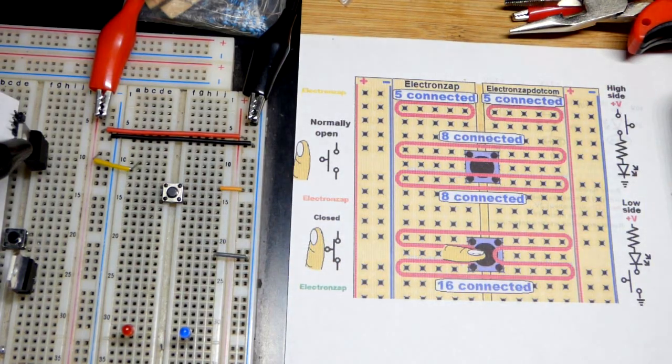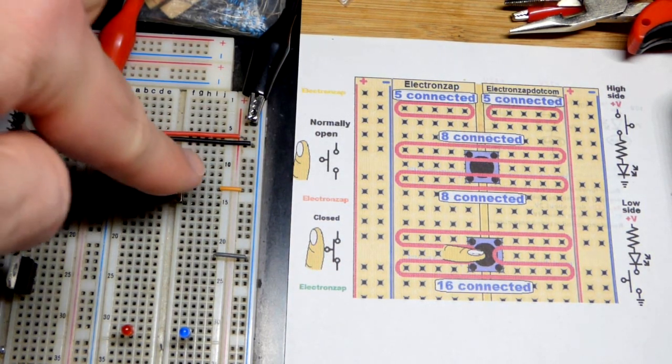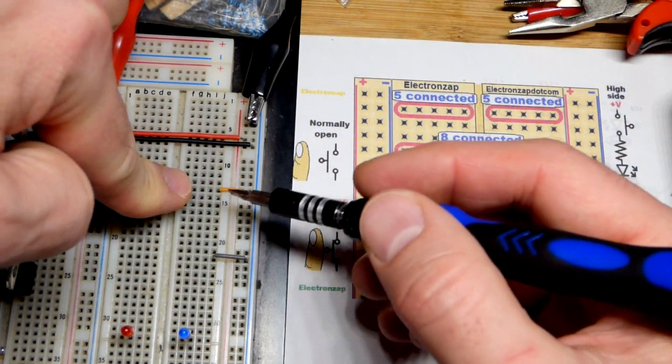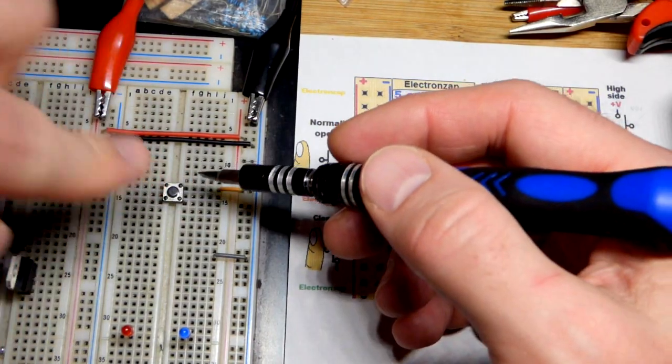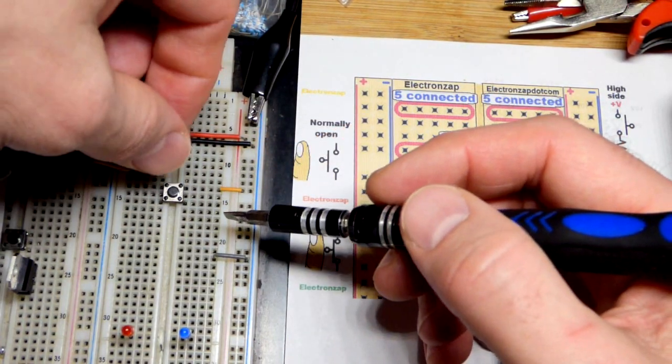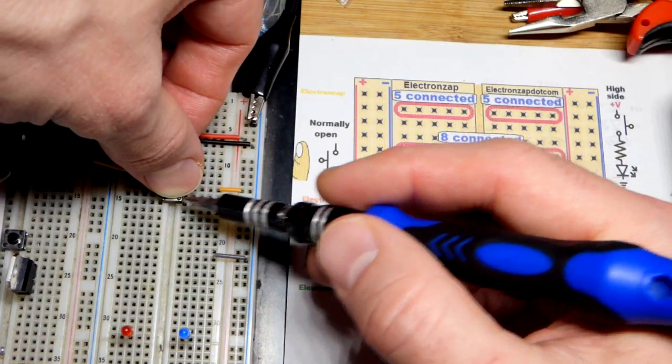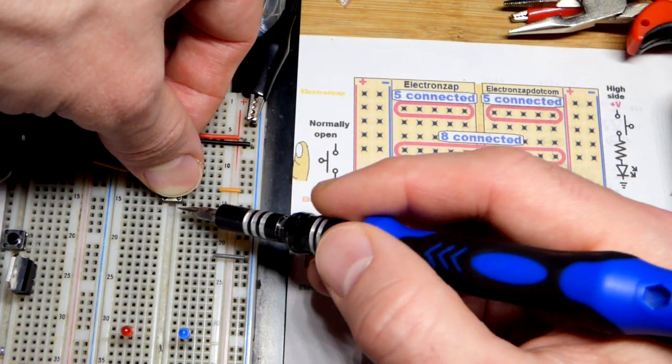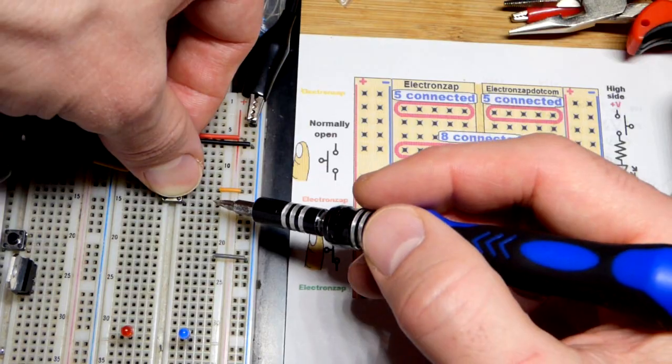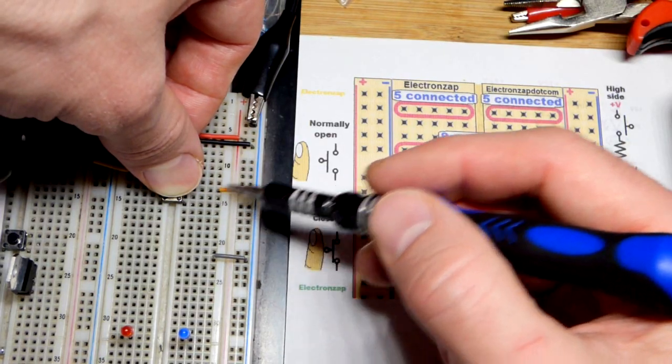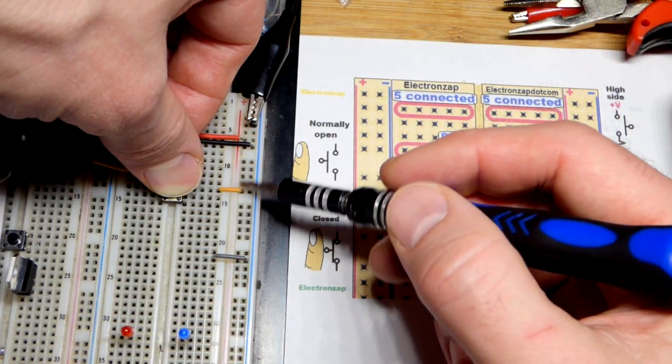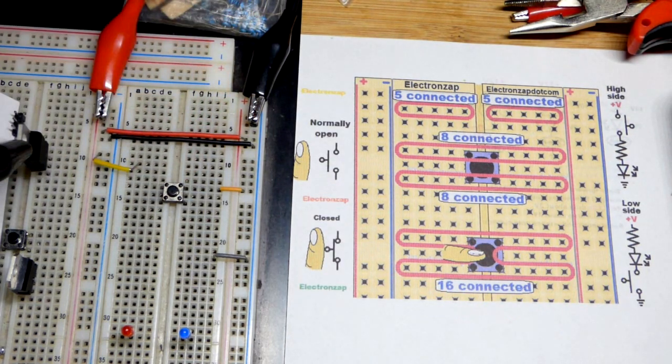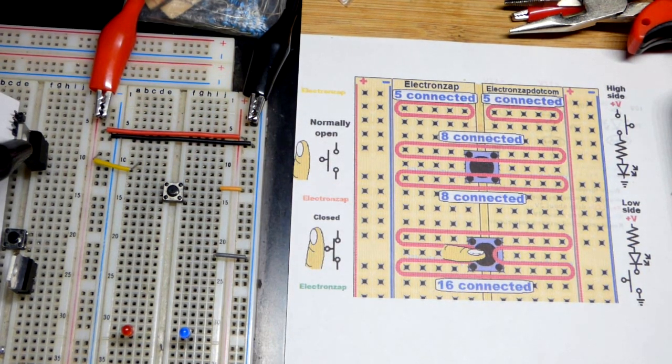If I press the button now, this orange jumper is connected still over there, but also down here these other ten holes, two of them taken up though so we got eight more holes there that are now a direct connection to this orange jumper which is going to the positive supply right there.